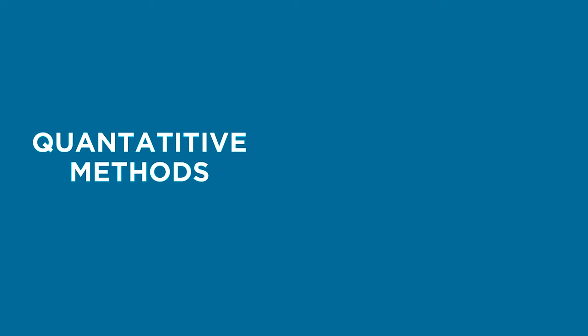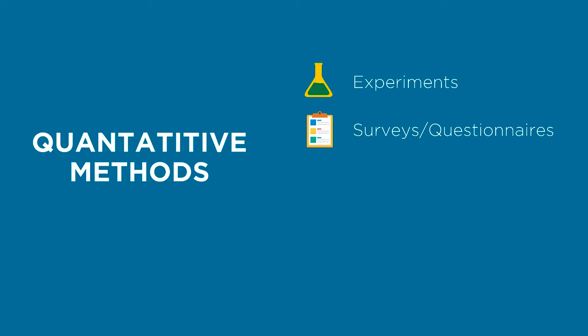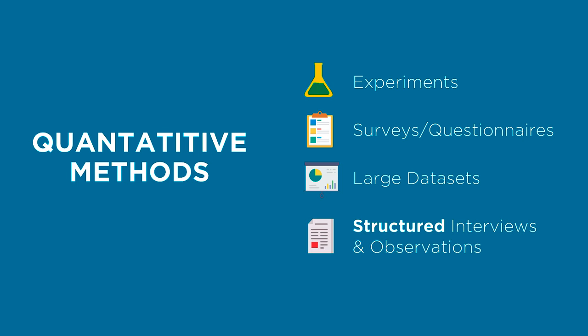Since the goals of quantitative and qualitative studies are different, their methods and data are different too. A quantitative study might use experiments, surveys, or questionnaires, analysis of large data sets like U.S. Census data, or structured interviews and observations where questions and observation criteria are exactly the same for each participant. Data in a quantitative study is numerical in the first place, or is quantifiable.